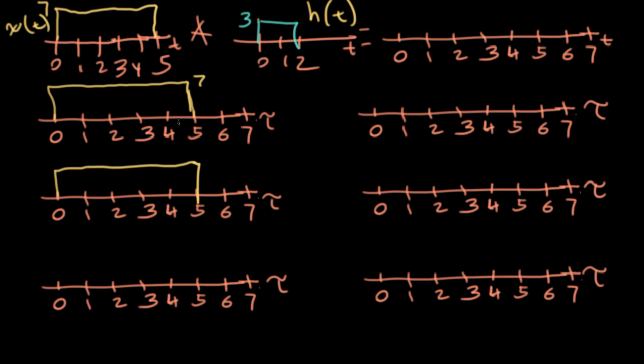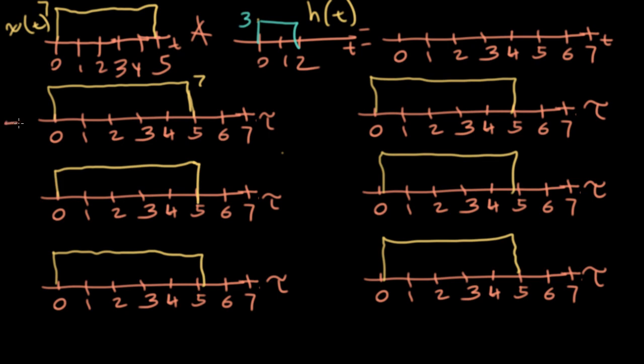I need to pick one of these blocks to be the one that stays stationary and the other to be the one that I flip and shift. Just because I think it's easier to see what's going on, I'm going to pick the x block, the yellow block here, to be stationary. So I've drawn six versions of the axes here. To avoid things getting cluttered, I'm only going to write this 7 once.